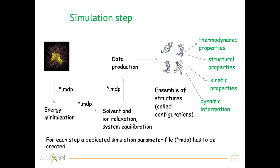When starting a simulation, several phases are typically followed. First, energy minimization: relaxing the molecule in the potential used to describe the model. Second, relaxing the positions of solvent and ions around the macromolecule. Third, equilibrating the whole system. Finally, the data production phase, which provides an ensemble of conformations from which we can extract thermodynamic, structural, kinetic, dynamic, and mechanical properties. Each phase before data production uses a different set of MDP parameters.